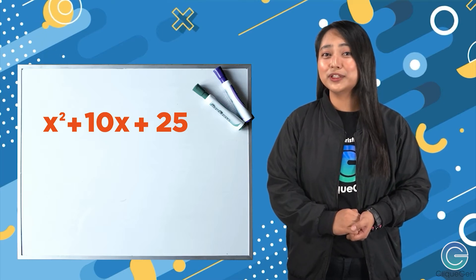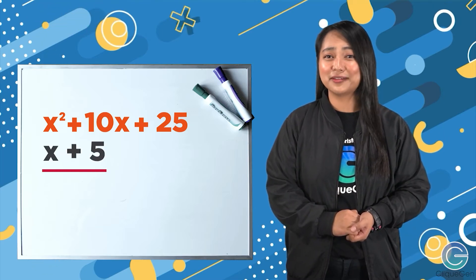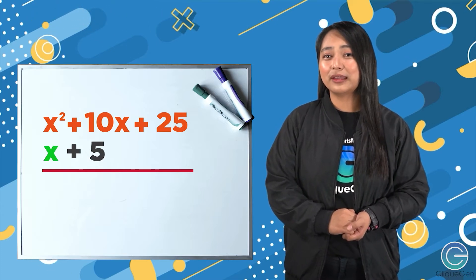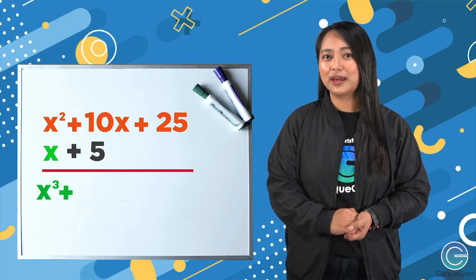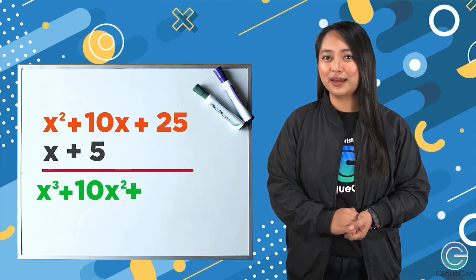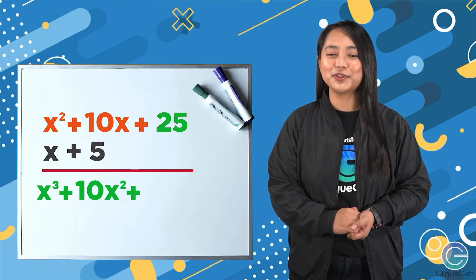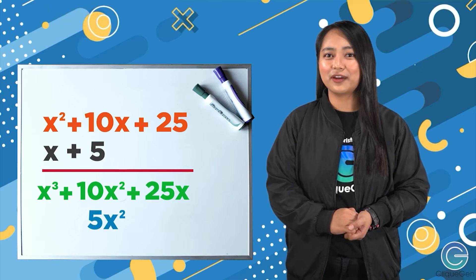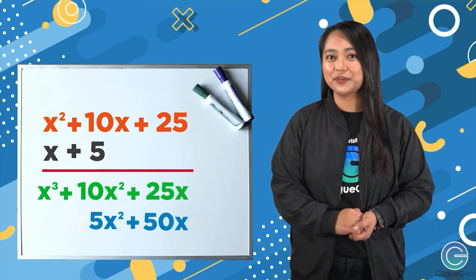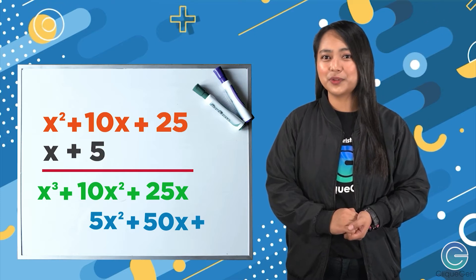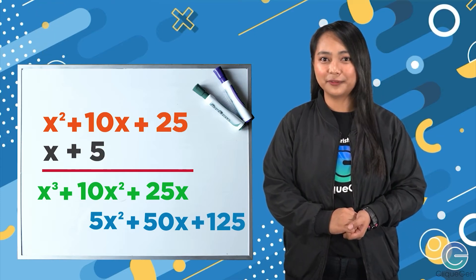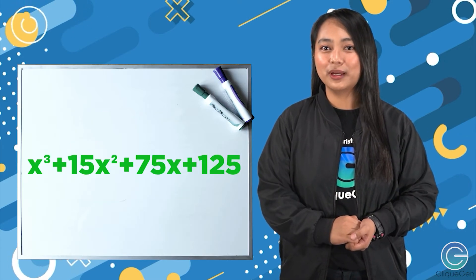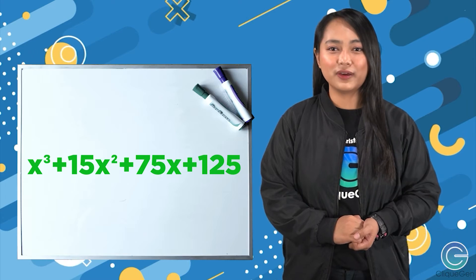After that we multiply the product with another x plus 5, so x plus 5 will be our multiplier. x times x squared is x cubed, x times 10x is 10x squared, and x times 25 is 25x. Then 5 times x squared is 5x squared, 5 times 10x is 50x, and 5 times 25 is 125. Combining similar terms, the result is x cubed plus 15x squared plus 75x plus 125.